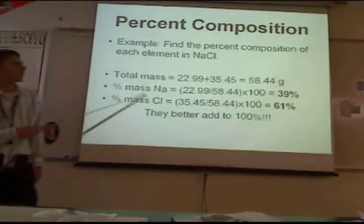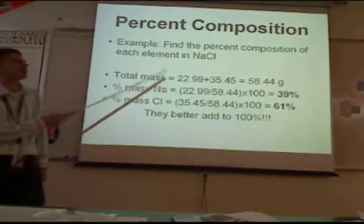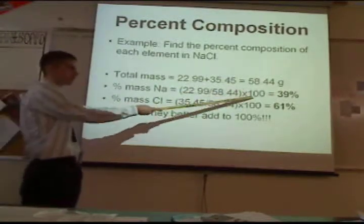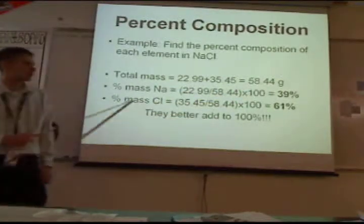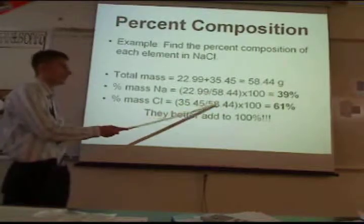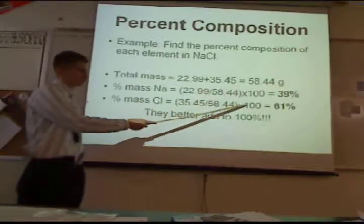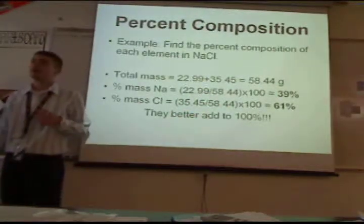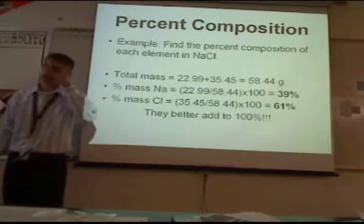Your percent mass of sodium is sodium divided by the total times 100. Chlorine would be chlorine divided by the total times 100. And all your percentages had better add up to 100, or you have yourself an issue.